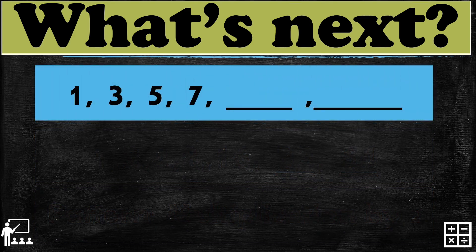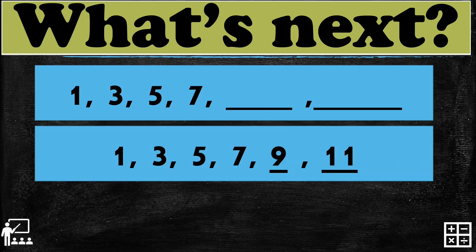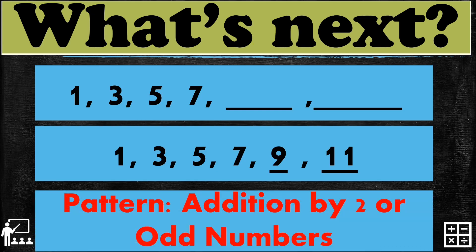Next example: 1, 3, 5, 7. Can you guess the two next numbers? That's right, 9 and 11. So the sequence is 1, 3, 5, 7, 9, and 11. The pattern used in this sequence can be addition by 2, or odd numbers.